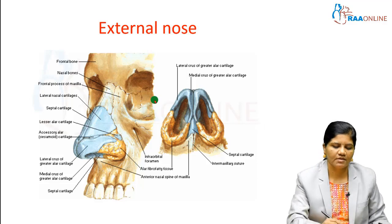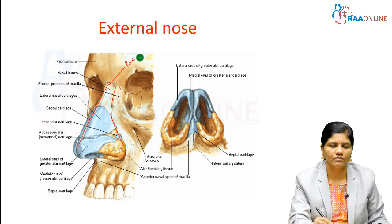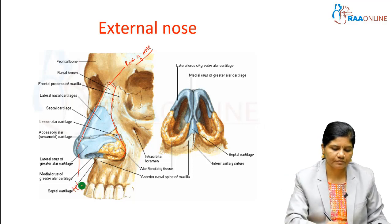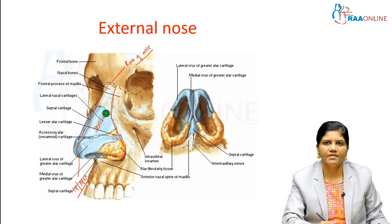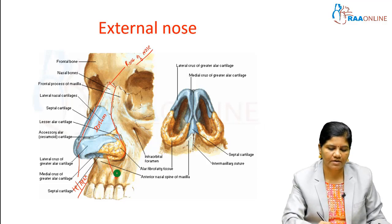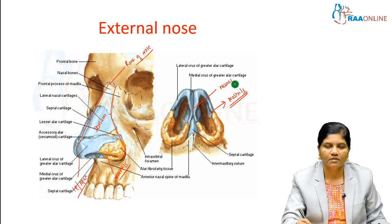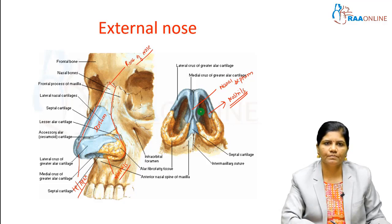This is the external nose. The external nose has the root of the nose, the tip of the nose or apex of the nose, and on either side this is the dorsum of the nose. Externally it has a communication with the exterior through the nostrils or nares — this is the inferior view of the nostrils. In between there is a septum that divides the nasal cavity into halves. It is made up of bones as well as cartilages.